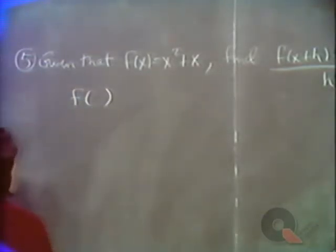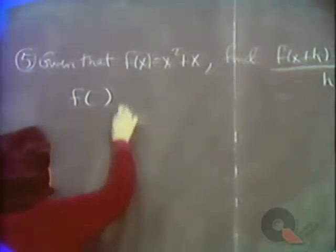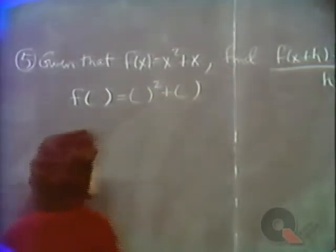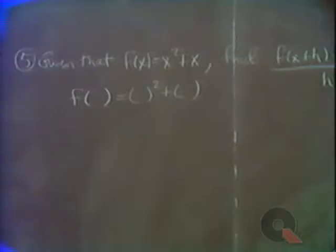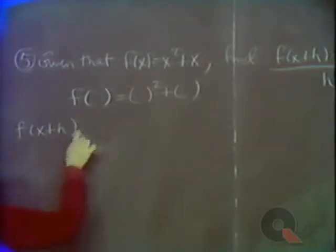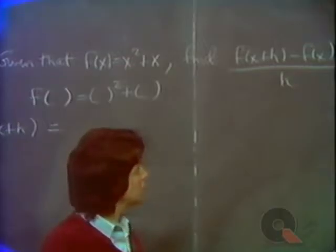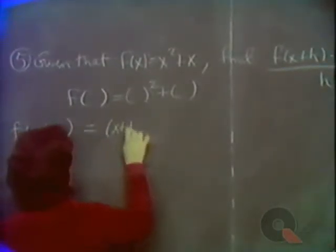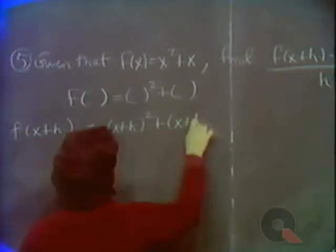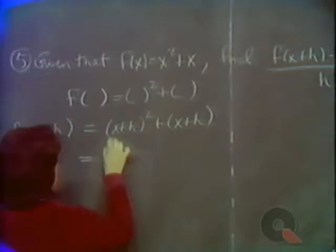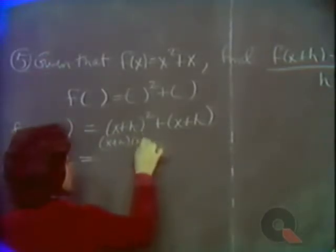The function has one job: you give it a number and it squares the number and adds the original number to it. To find f of x plus h, even though the problem was given all in one, we can break it into smaller parts. f of x plus h would be the quantity x plus h squared plus x plus h, where x plus h squared is x plus h times x plus h, to be expanded by FOIL.